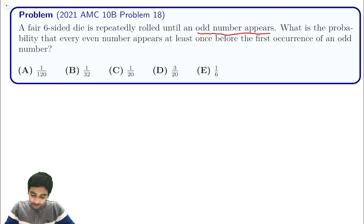What's the probability that every even number appears at least once before the first occurrence of an odd number?